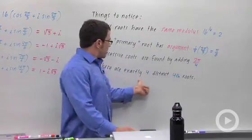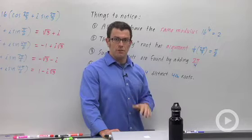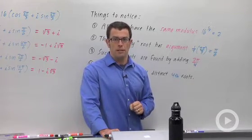And then, remember, there are exactly four distinct fourth roots. Five distinct fifth roots, six distinct sixth roots, and so on. These are the things to remember when you're looking for the roots of a complex number.